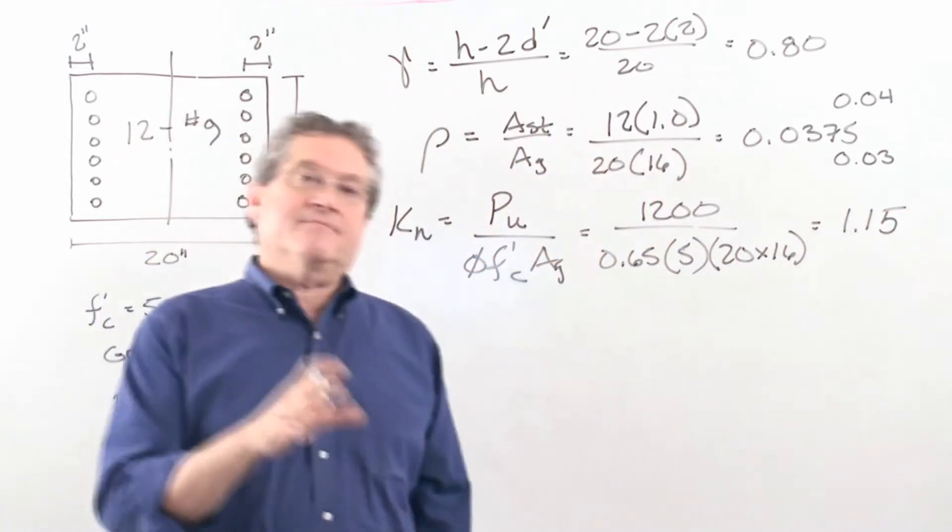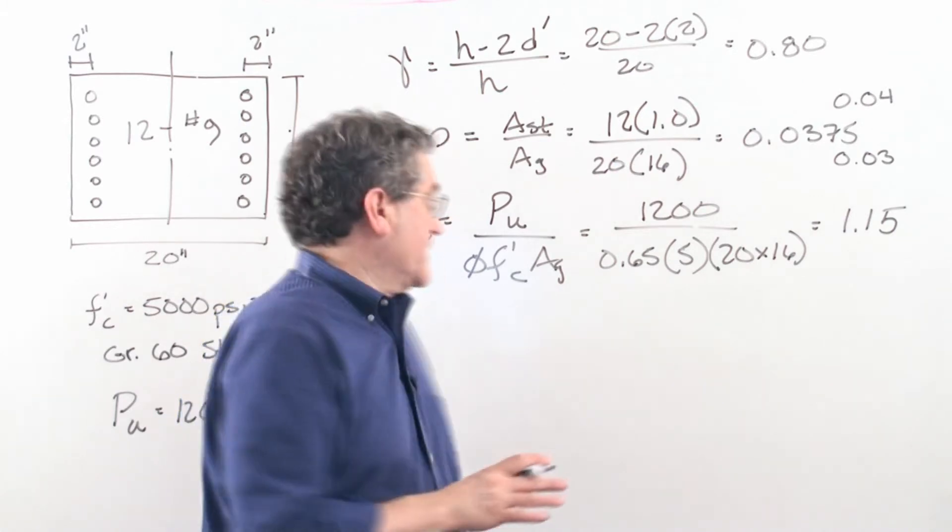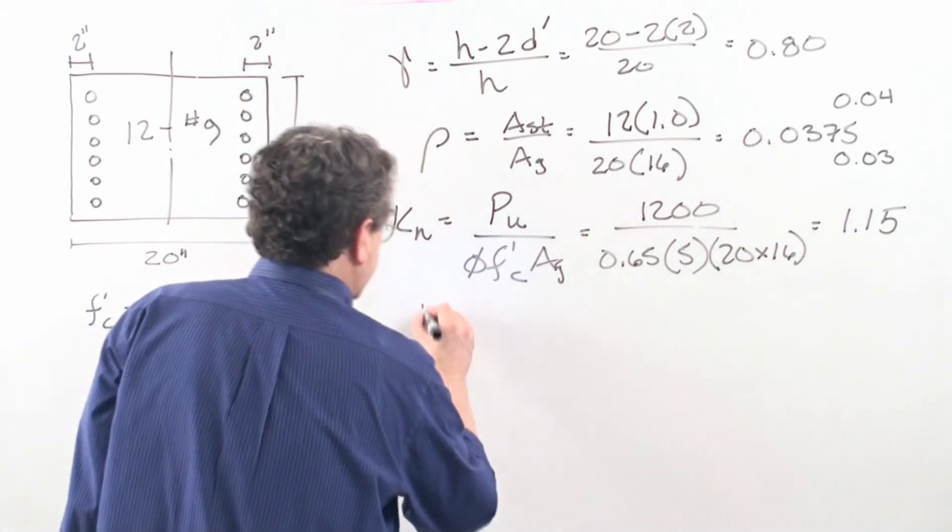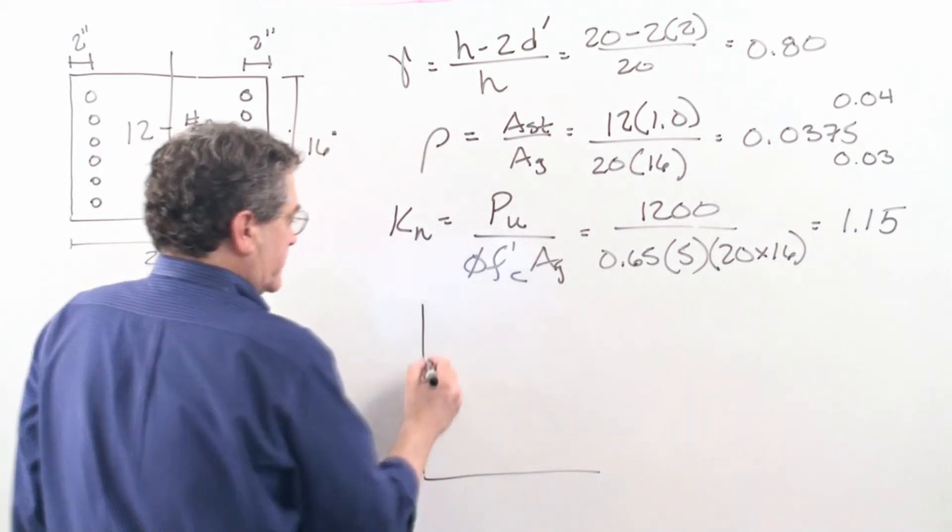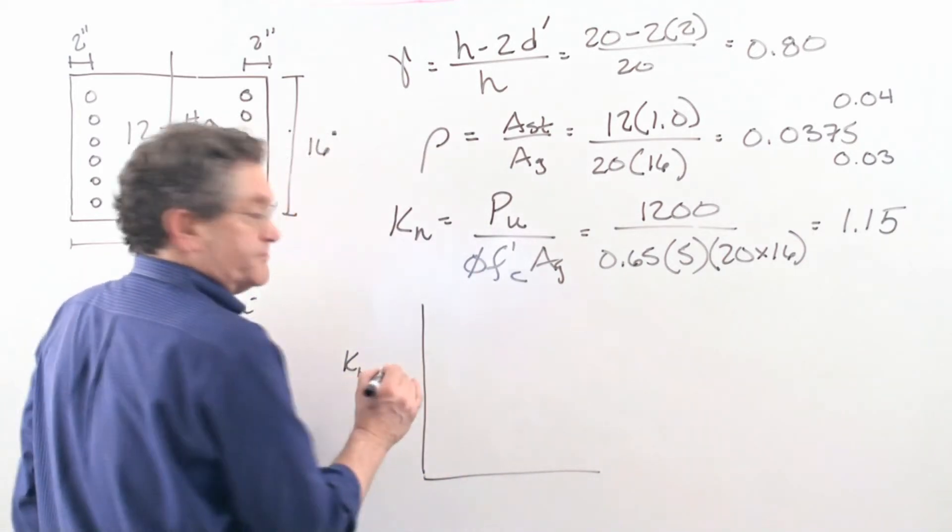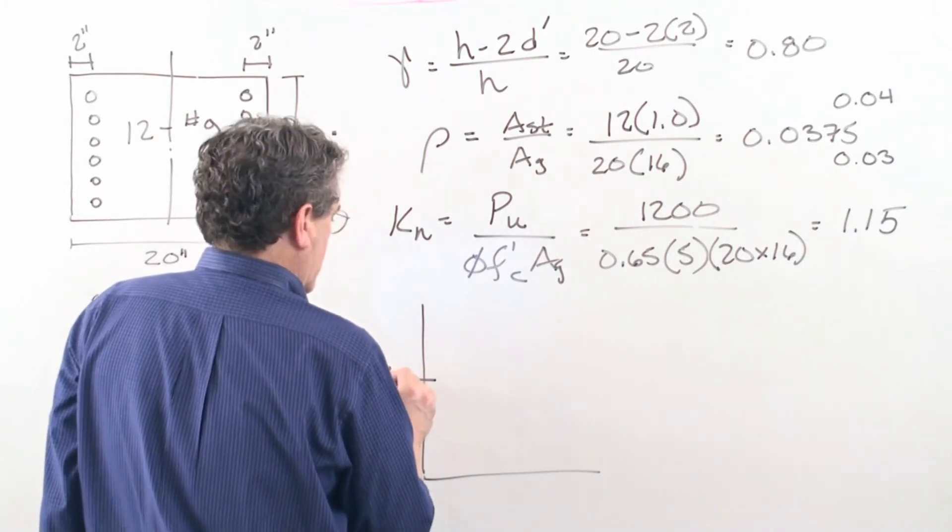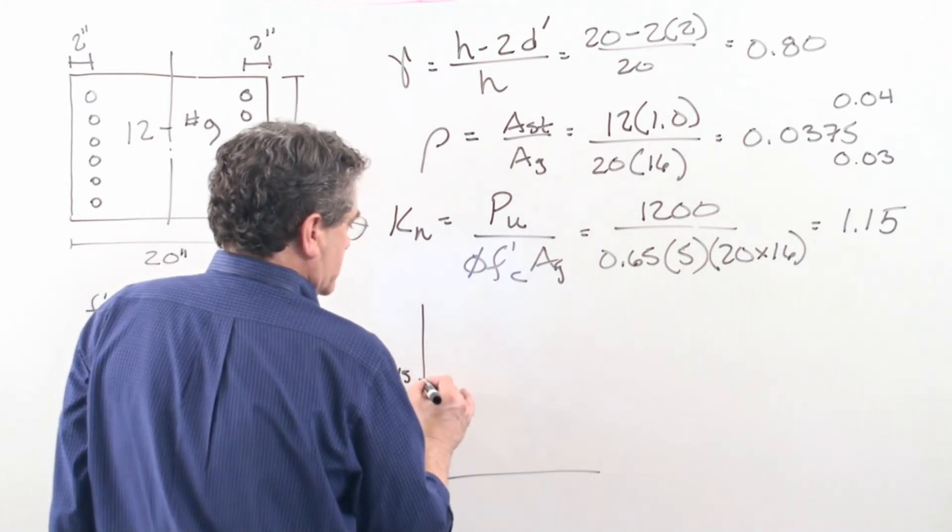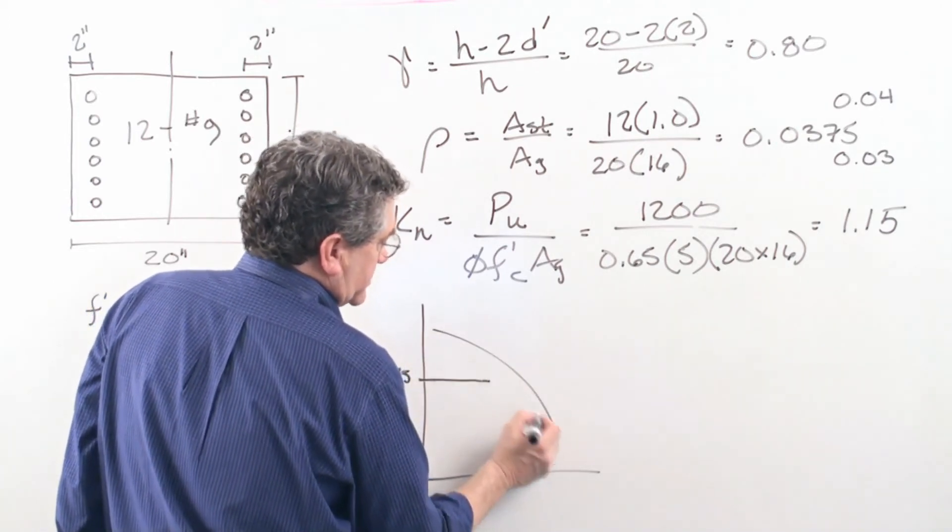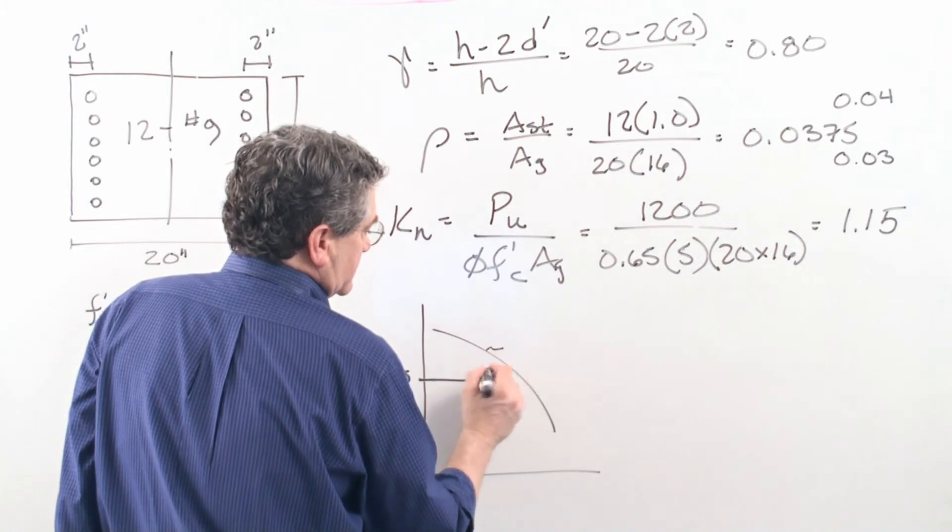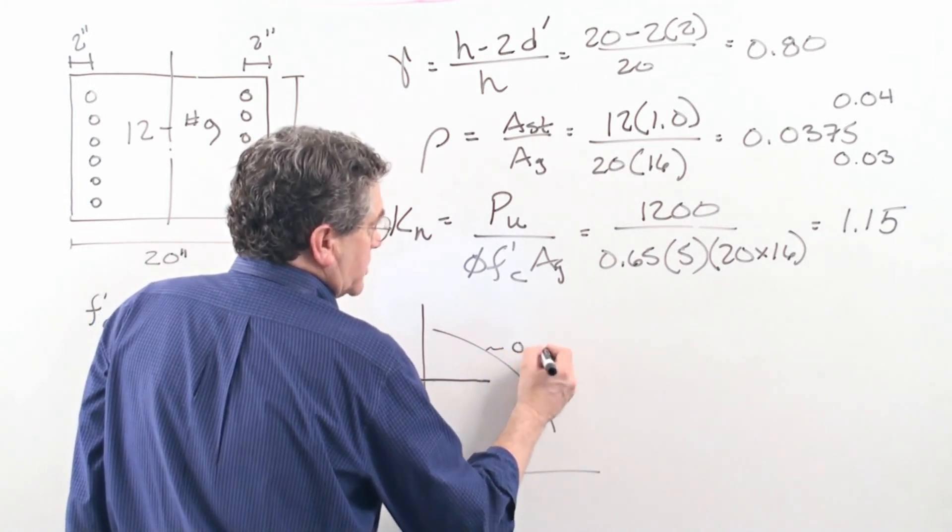The next step is, what we do is we go into the interaction diagram, and let me just draw a small one here. So we have KN, so we go in at the 1.15. What we do is we come across, and we'll have our curves, and say that is the rho.